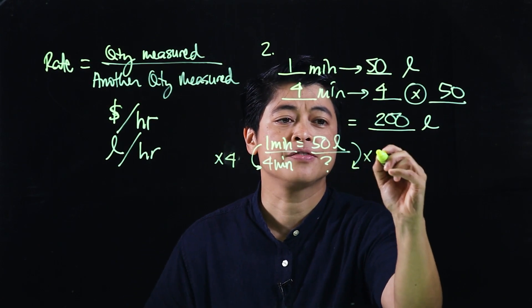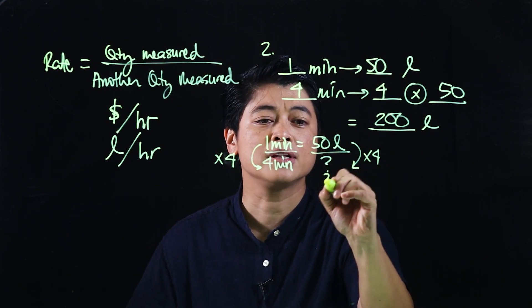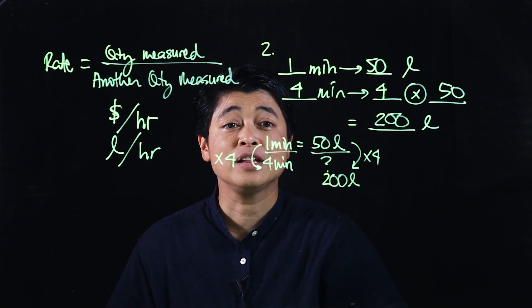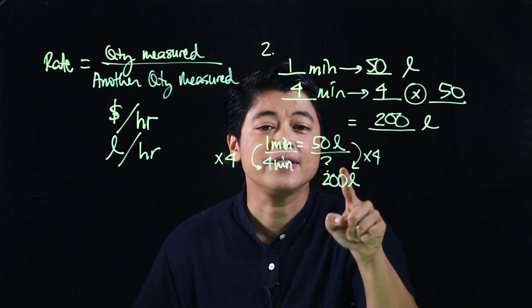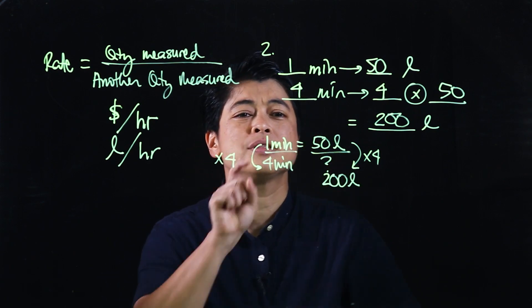So for me it doesn't make a difference because it'll give me the same answer. So this is times four and this is times four. If I multiply 50 times four, that will give me 200 liters.